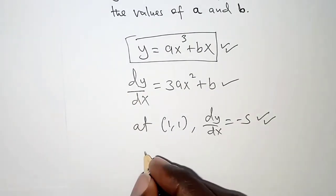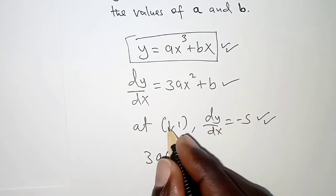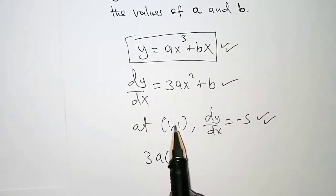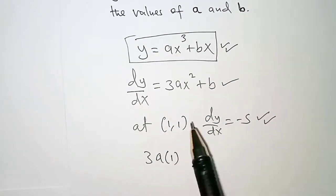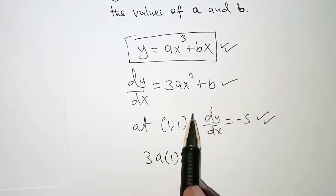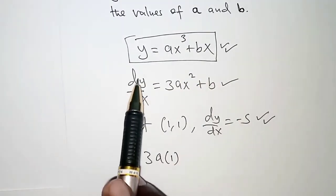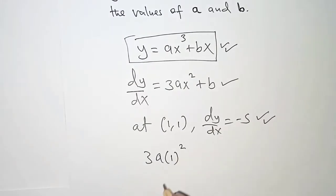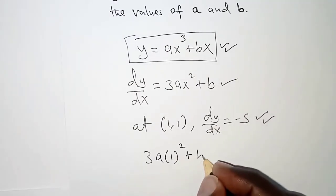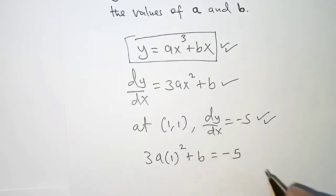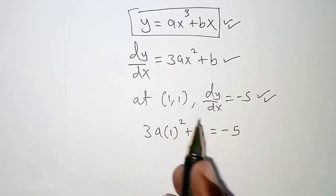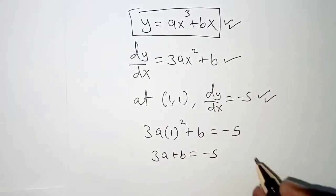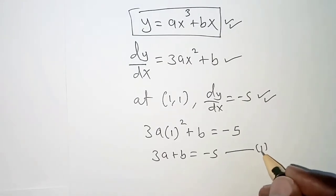If we know the value of x we can substitute it into the gradient function and say that dy over dx equals 3ax squared, and x is 1 — the x-coordinate of the point. We are not interested in the y-coordinate here since there is no y in the gradient function. So we have 3a into 1 squared plus b, and that equals negative 5. So our first equation is: 3a plus b equals negative 5.